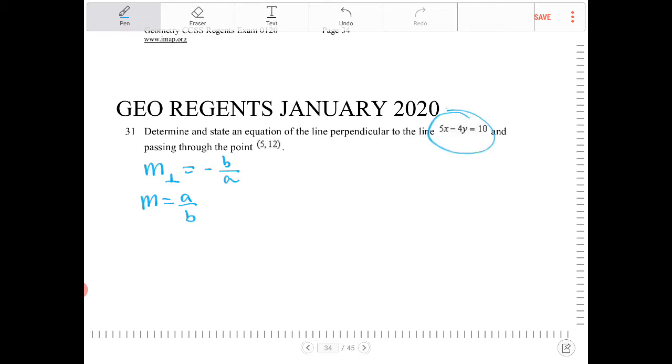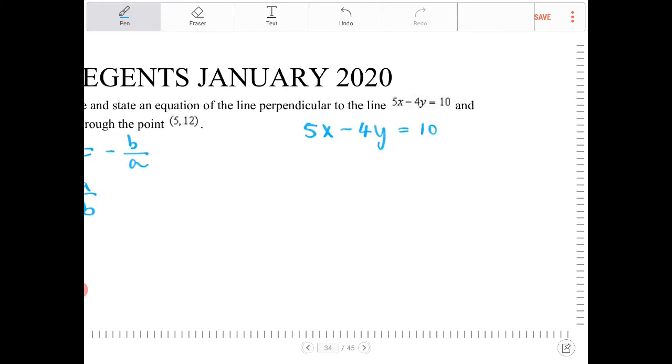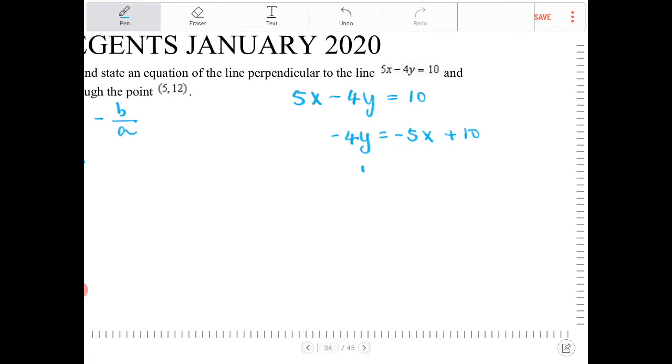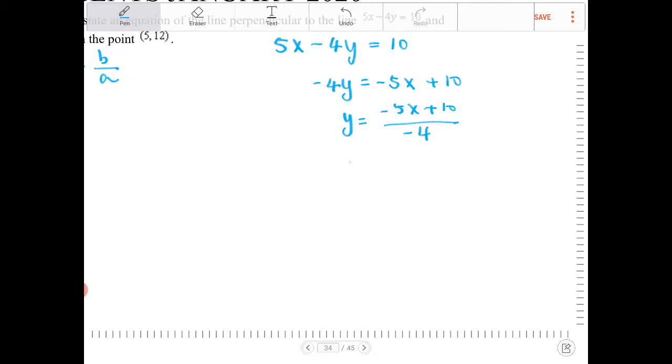So looking at this equation right now, I have 5x minus 4y equals 10. What I'm going to do is solve for y to try to extract the slope. So I'm going to subtract both sides by 5x and divide both sides by negative 4. So if I do that, I'll end up with negative 5x plus 10 over negative 4. And to simplify this, the negative 4 goes into both negative 5x and into the 10.